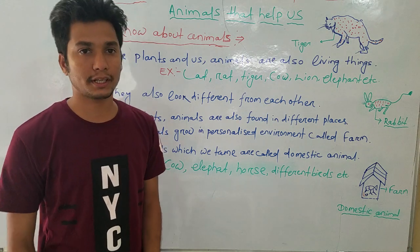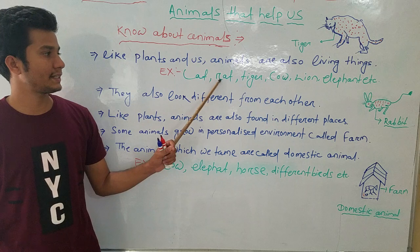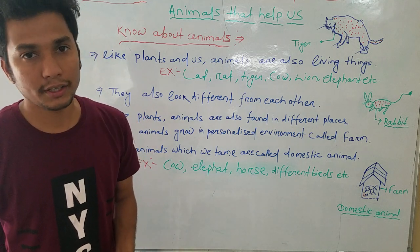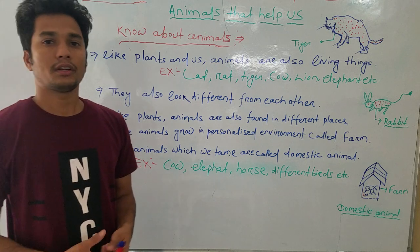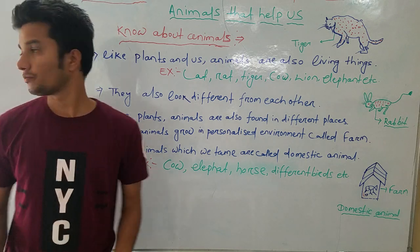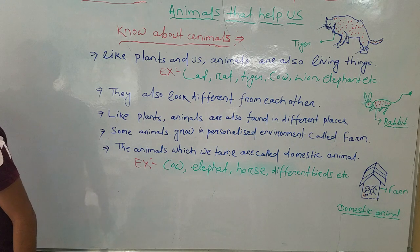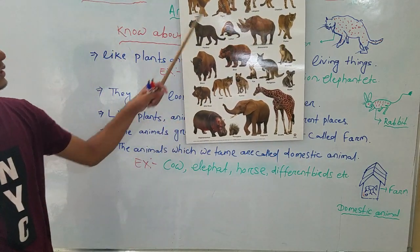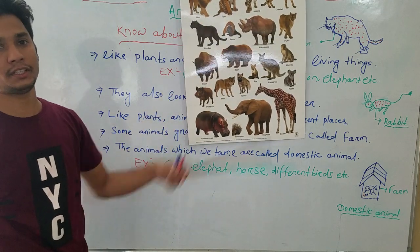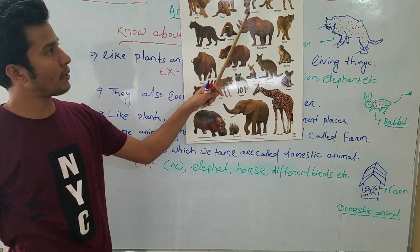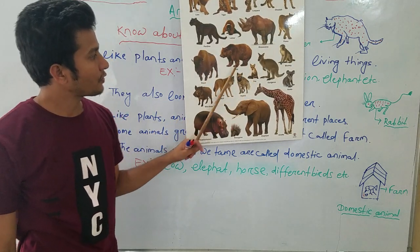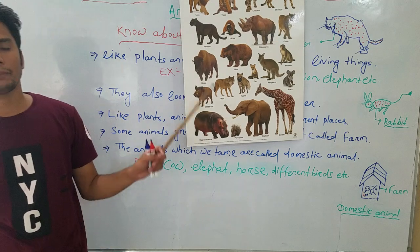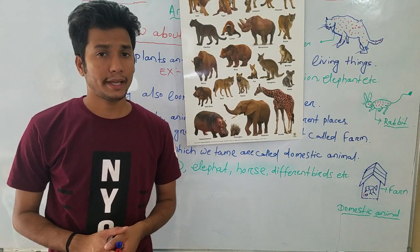There are different types of animals. You might know some examples: lion, tiger, cow, elephant, dog, and many others in our environment. See students, these are wild animals. In front of you, you can see lion, tiger, leopard, panther, rhinoceros, deer, fox, elephant, wolf. These are the different types of animals you can find in your environment.